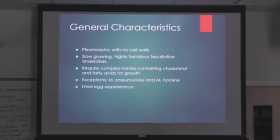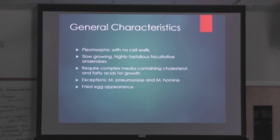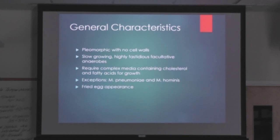Mycoplasms are slow-growing and require complex media containing cholesterol and fatty acids for growth. However, M. pneumoniae and M. hominis are exceptions to that — for example, hominis can grow in BAP and chocolate without a problem, and pneumoniae grows on something called PPLO, which is basically a name for a type of plate. And mycoplasms have what's called a fried egg appearance — they literally look like fried eggs under a microscope.